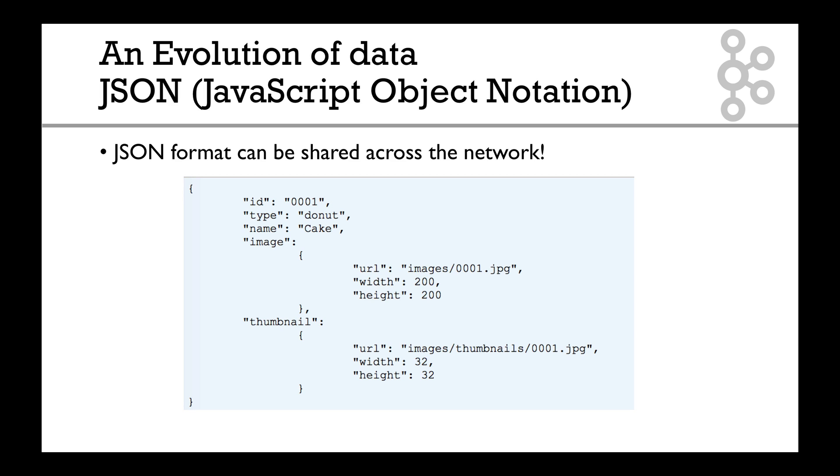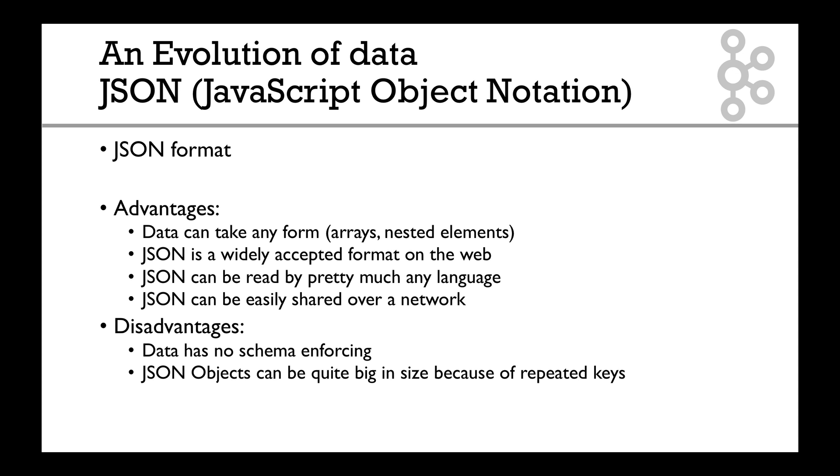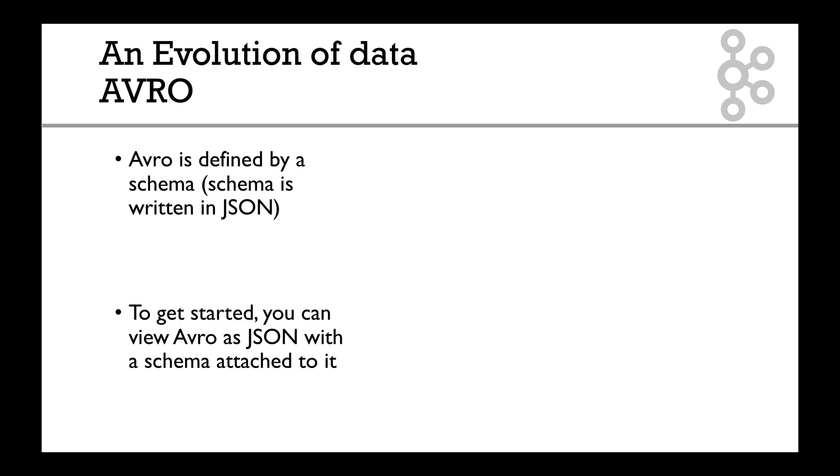For all these advantages and disadvantages, there is one answer: it's Avro. Avro is defined by a schema and the schema itself is written in JSON. So to get started, you can view Avro as JSON with a schema attached to it.